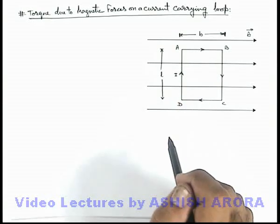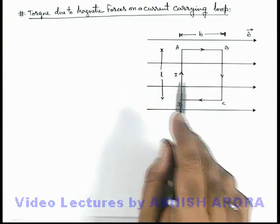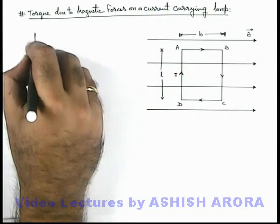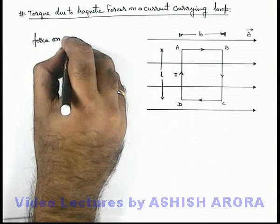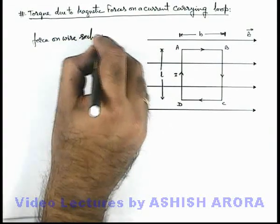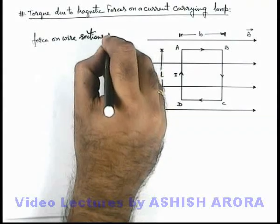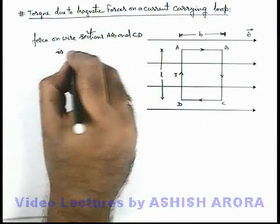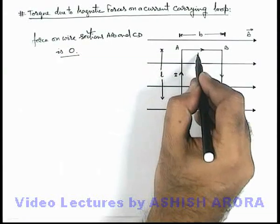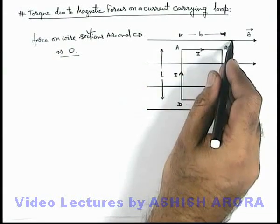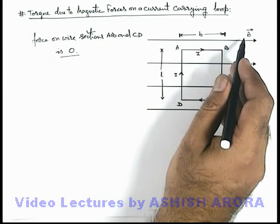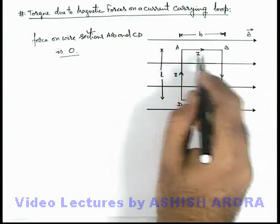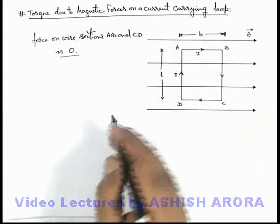In this situation, if we analyze the forces acting on different wire segments of this loop, we can say that the force on wire sections AB and CD is zero. This is because the direction of current or the length is along magnetic induction, and those sections of wire which are parallel to the magnetic field do not experience any magnetic force.